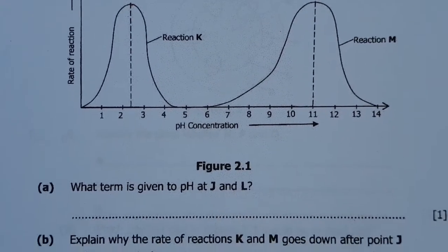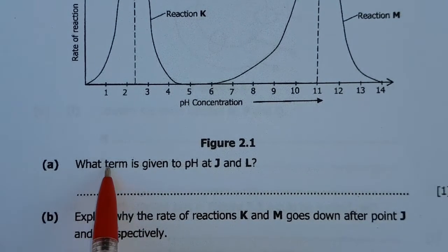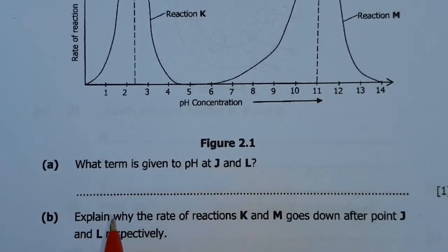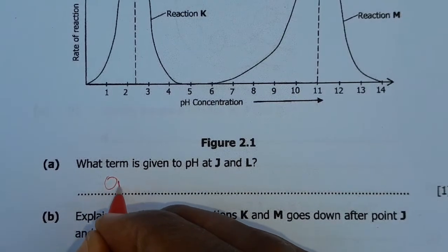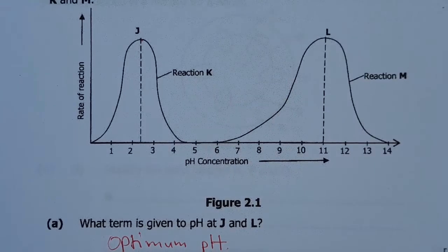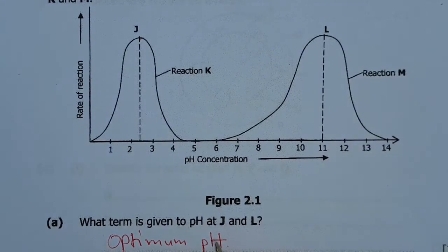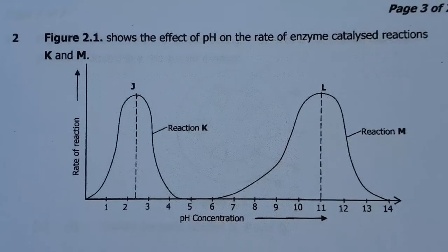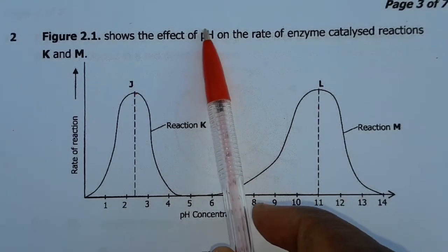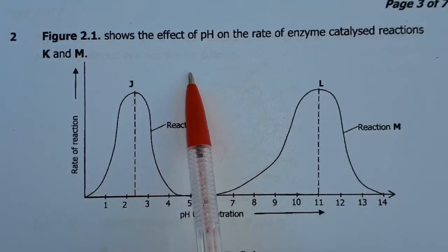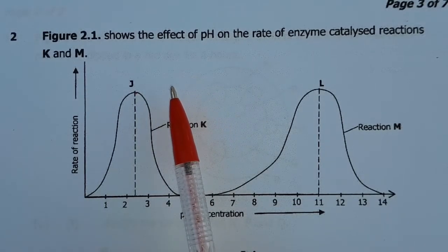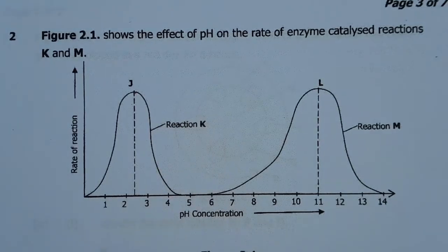So we're going to say the term that is used to describe the pH at J and L is the optimum pH. We are saying optimum pH because these two reactions are involving the pH and not the temperature. If these two reactions were involving the temperature, then point J and L was going to be optimum temperature.